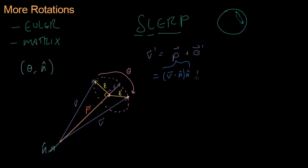This will be E times cosine theta plus F times sine theta.